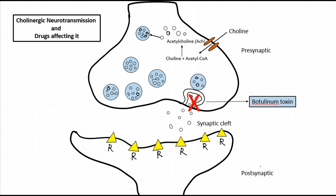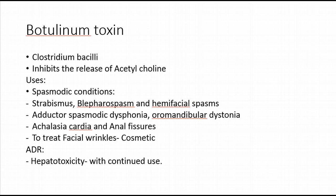These effects are mainly seen at the neuromuscular junction. Key points about botulinum toxin: it is released by Clostridium bacilli, and its major mechanism is inhibition of the release or exocytosis of acetylcholine. Important uses include spasmodic conditions like strabismus, blepharospasm, and hemifacial spasms.